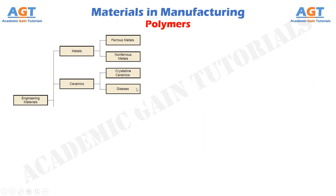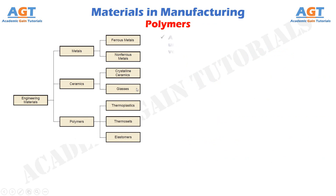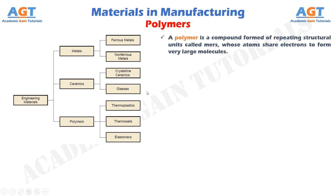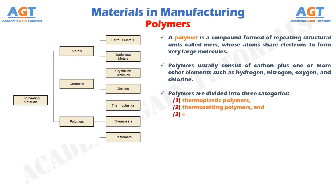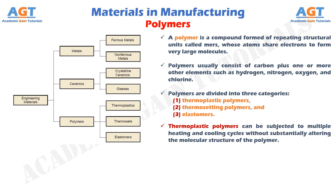A polymer is a compound formed of repeating structural units called mers, whose atoms share electrons to form very large molecules. Polymers usually consist of carbon plus one or more other elements such as hydrogen, nitrogen, oxygen, and chlorine. Polymers are divided into three categories: thermoplastic polymers, thermosetting polymers, and elastomers. Common thermoplastics include polyethylene, polystyrene, polyvinyl chloride, and nylon.